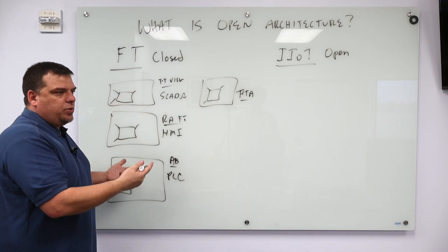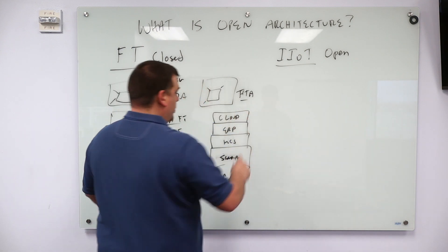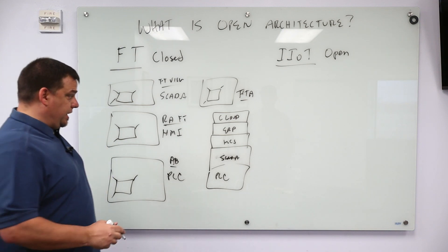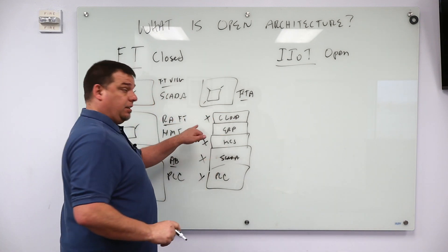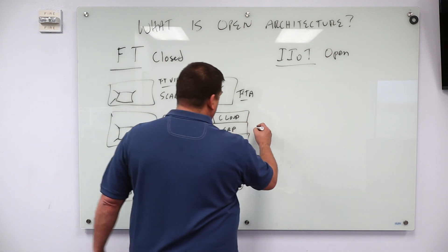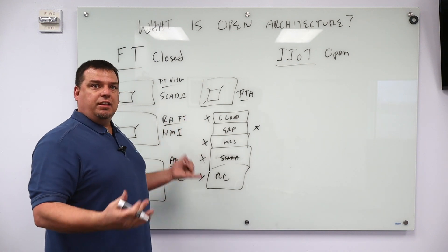This is, and there's a reason that Rockwell does this. We'll go back to our automation stack. Rockwell sells products at all of these layers. They don't sell ERP. They have Rockwell partners that sell ERP, but they sell products at each of these layers.